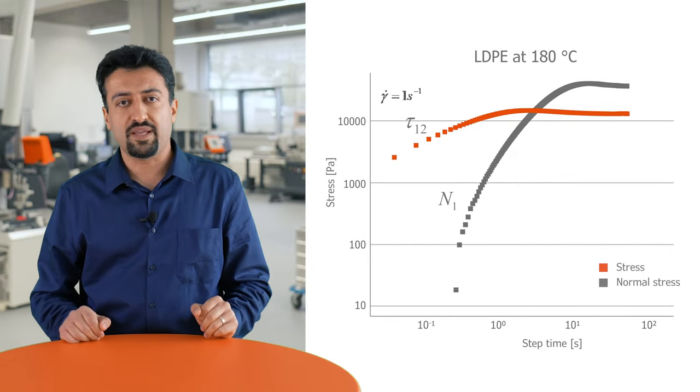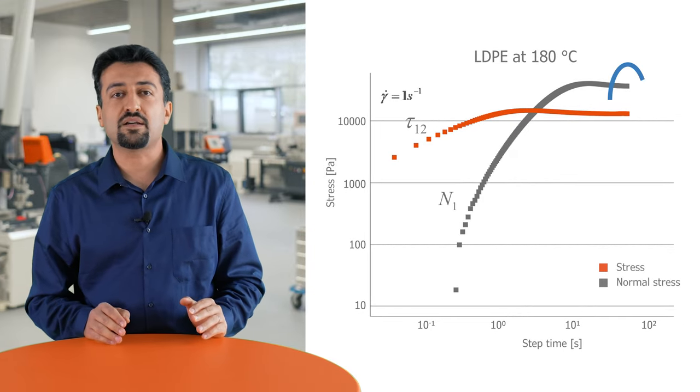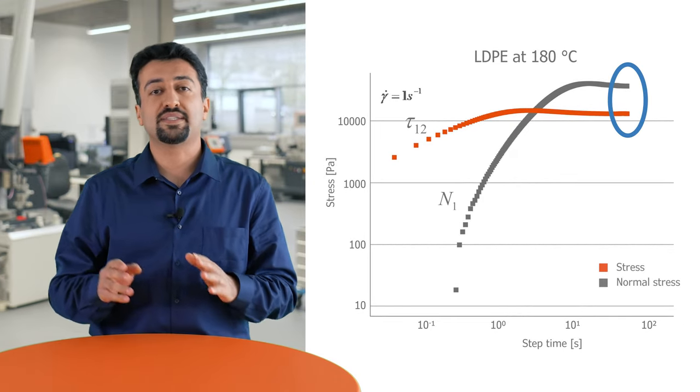I'm Masoud from Gottfried application department. Normal stresses are commonly measured in rotational rheometers in transient shear experiments. The sample is placed between parallel plate or cone and plate geometry and depending on the shear rate some amount of time is needed until the stress values reach steady state.